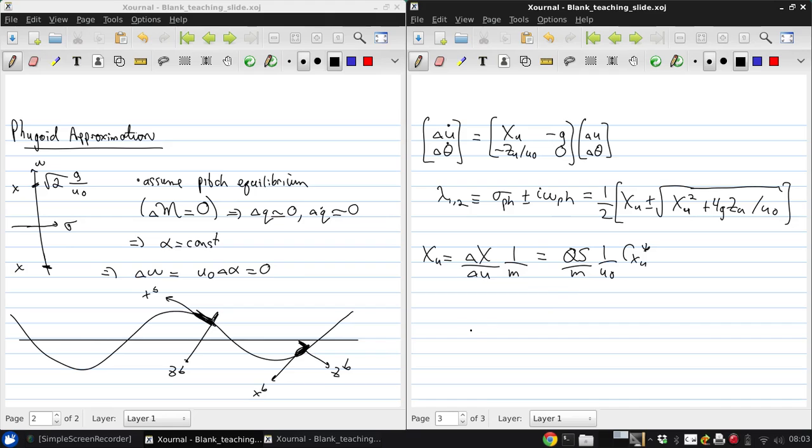Since from last time, we had delta X over M was approximately equal to QS over M times 2 CX0 delta U over U0, plus CX alpha delta alpha, plus CXQ delta Q bar, plus CX delta thrust delta delta thrust.